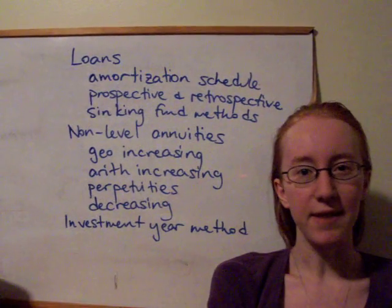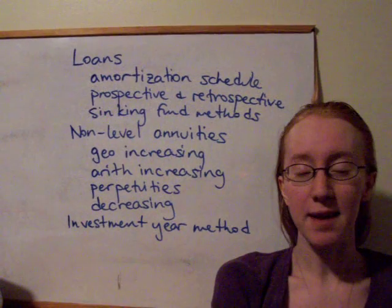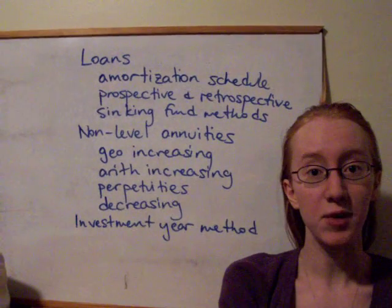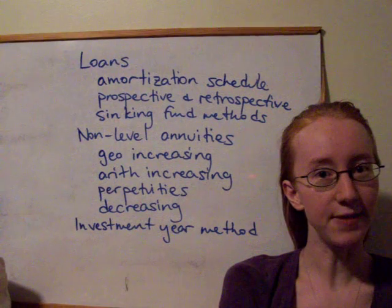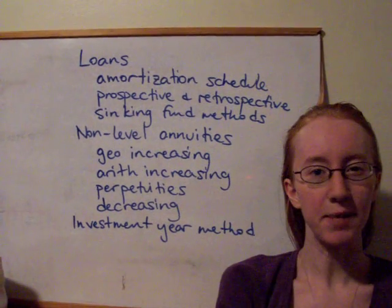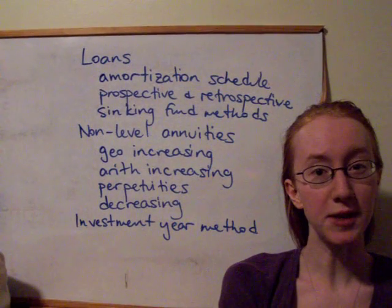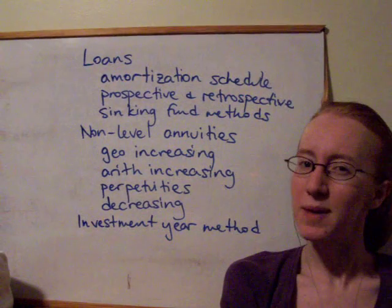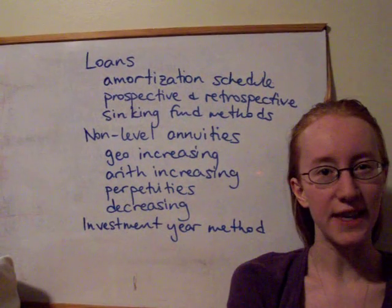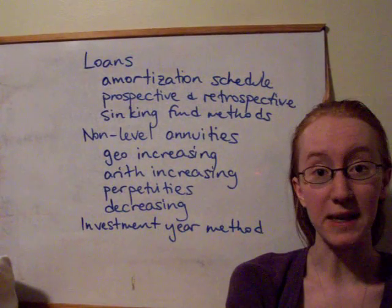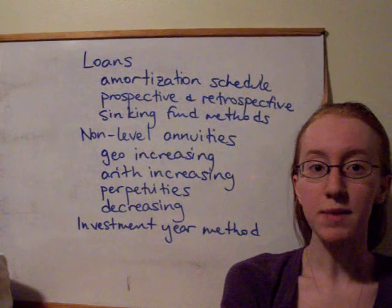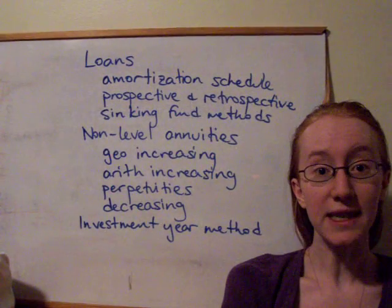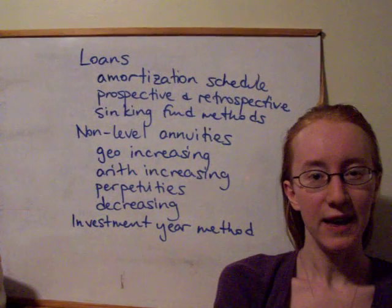We looked at one way of obtaining information at any particular time for a loan, and that was writing out a full amortization schedule, which gives us at every time how much the payment was, how much interest, how much principal, and what the outstanding balance was. But it would be really time consuming to do that if we ever wanted to know a single piece of information. So we developed two methods of calculating the outstanding loan balance: the prospective method and the retrospective method.